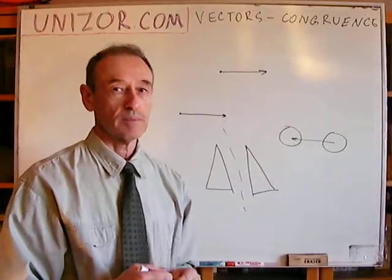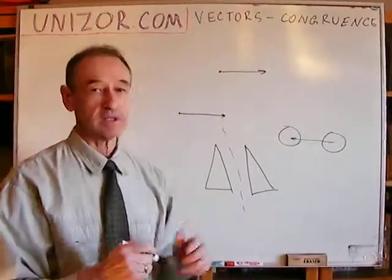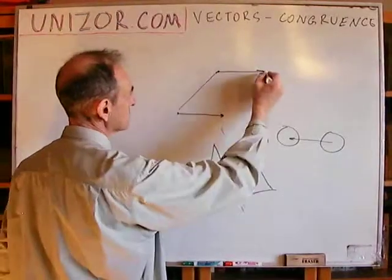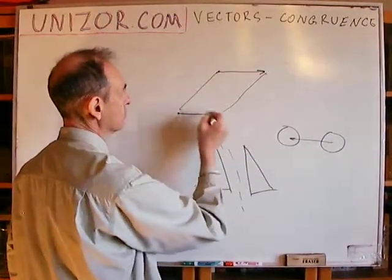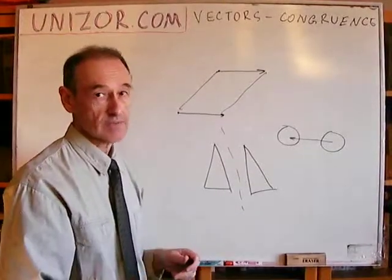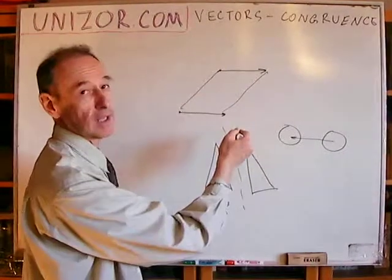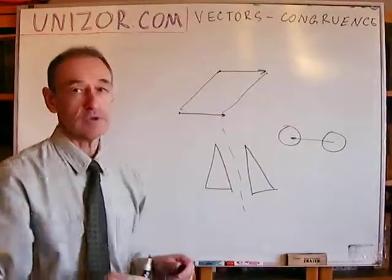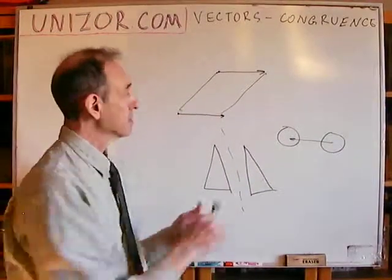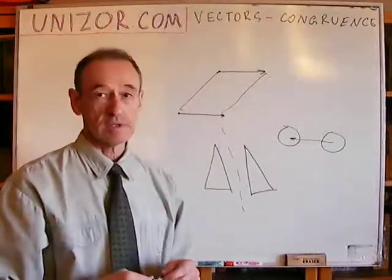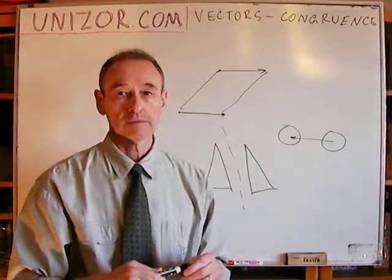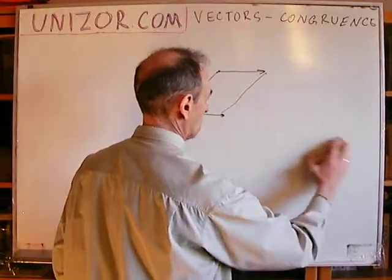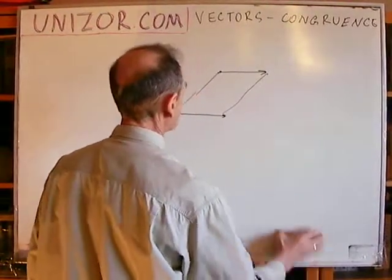Can I superimpose these two vectors so they coincide, and what kind of transformation should I use? I can obviously use a parallel shift — if I connect these two lines, I know they are parallel and of the same length, which means this forms a parallelogram. So these are parallel lines as well, and I'm shifting this vector parallel to itself towards the other, and they will coincide.